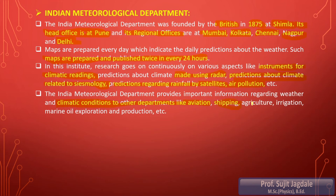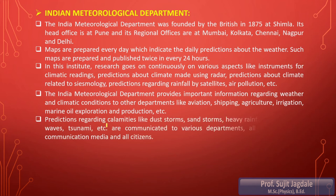IMD provides information to agriculture — most importantly, since India is an agrarian country — irrigation authorities controlling dams, and marine oil exploration and production plants situated in the ocean. People at such offshore plants receive warnings so they can be evacuated. Predictions regarding dust storms, sand storms, heavy rainfall, hot and cold waves, and tsunami are communicated to the various departments.